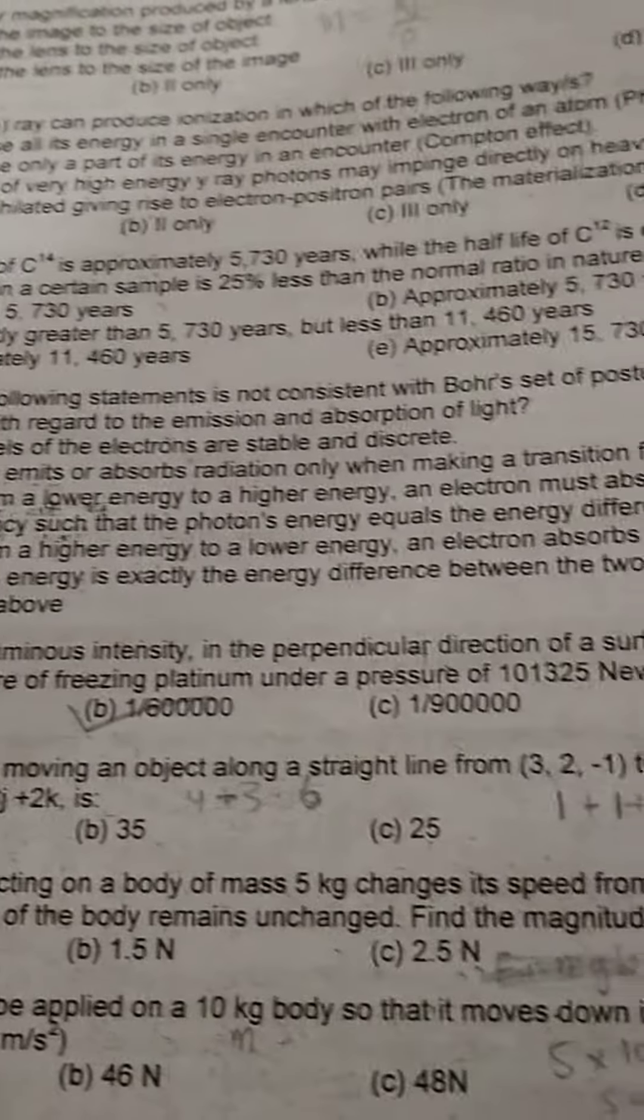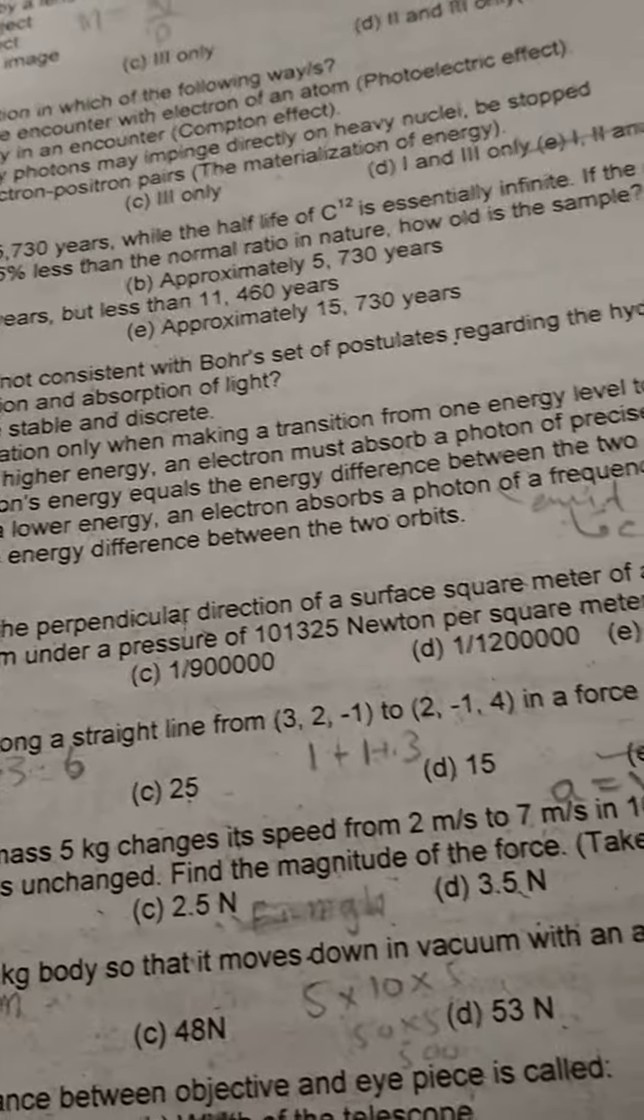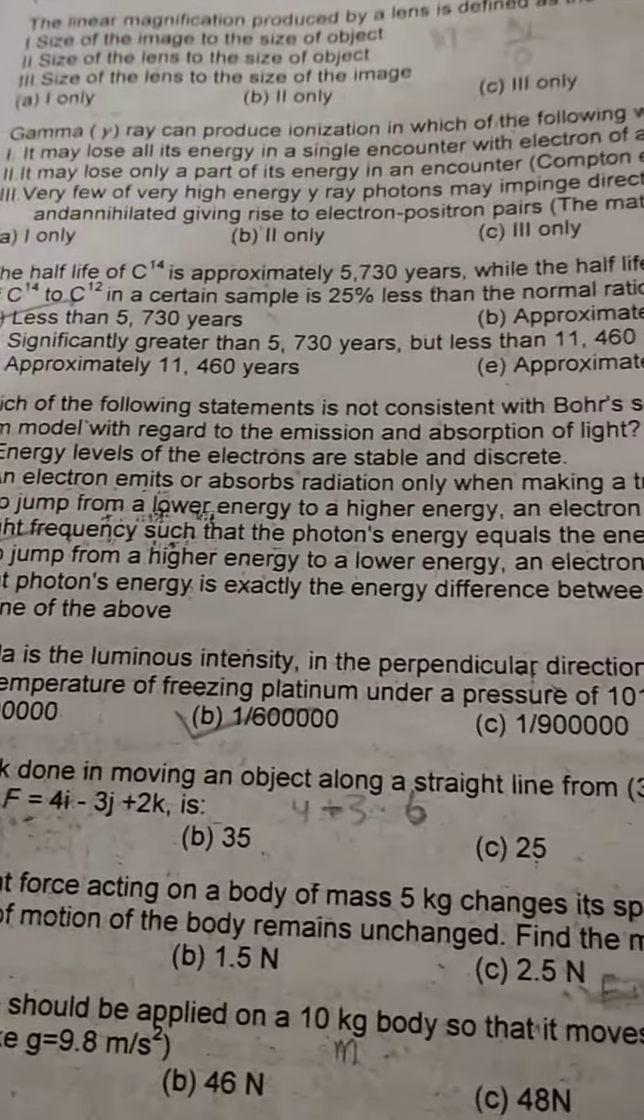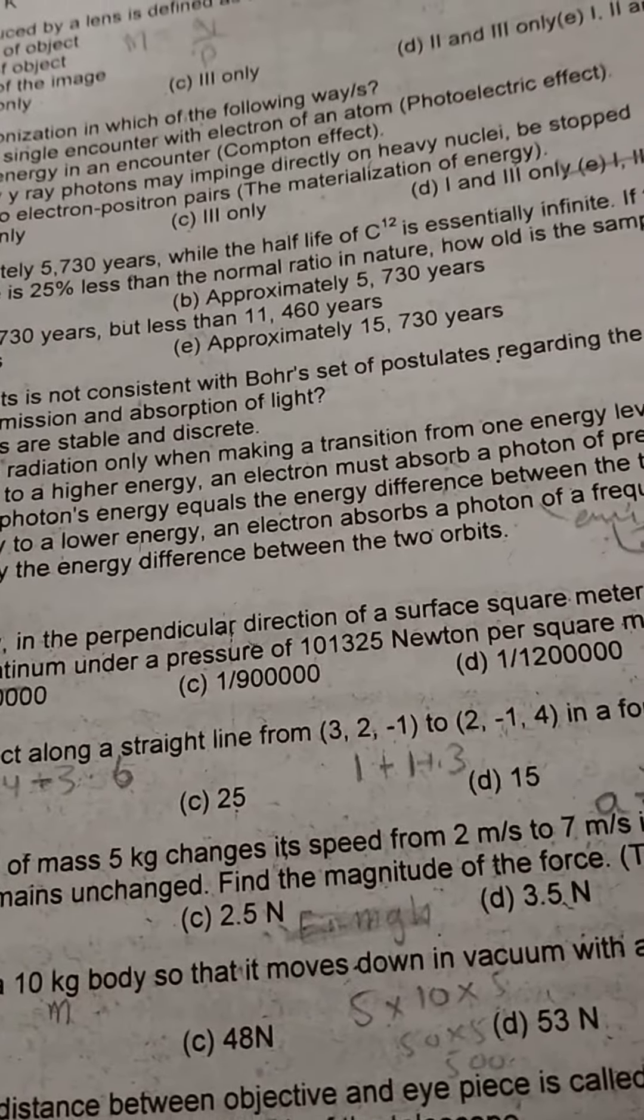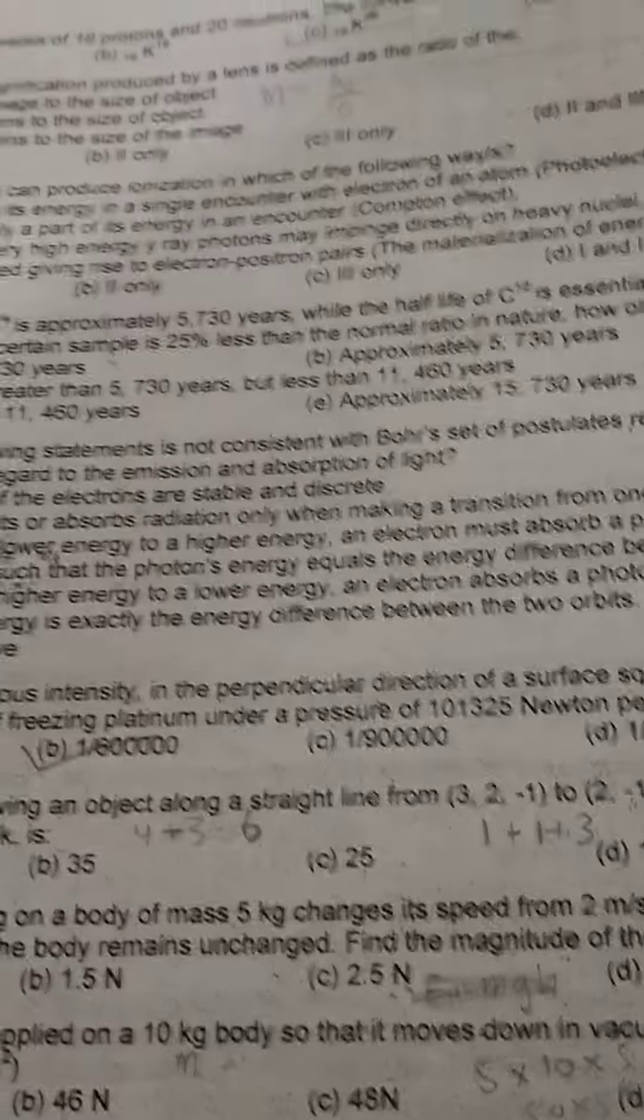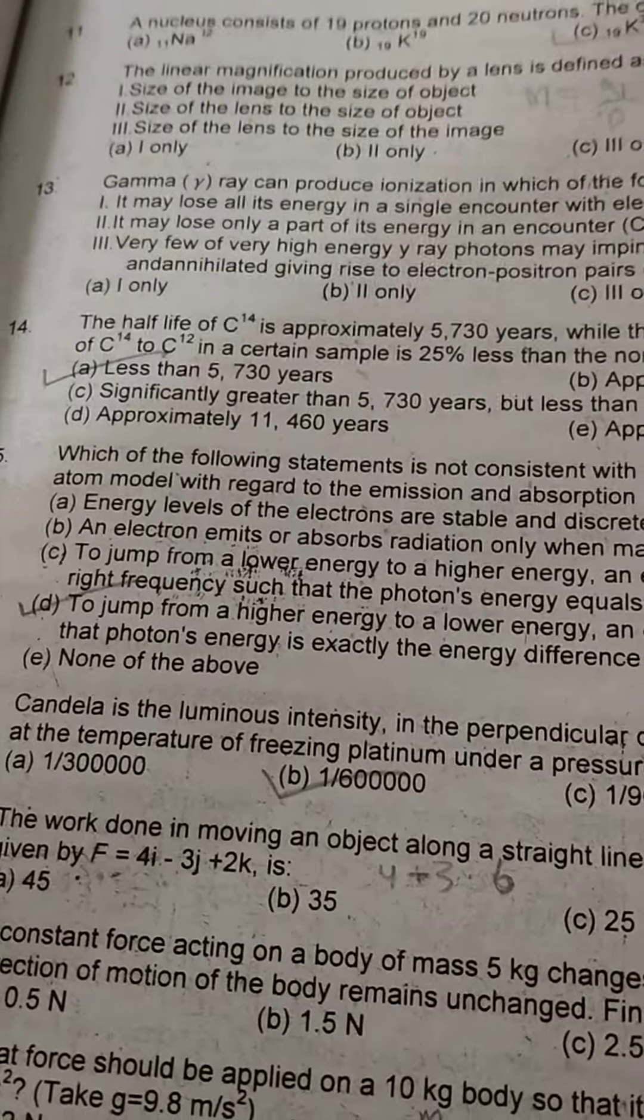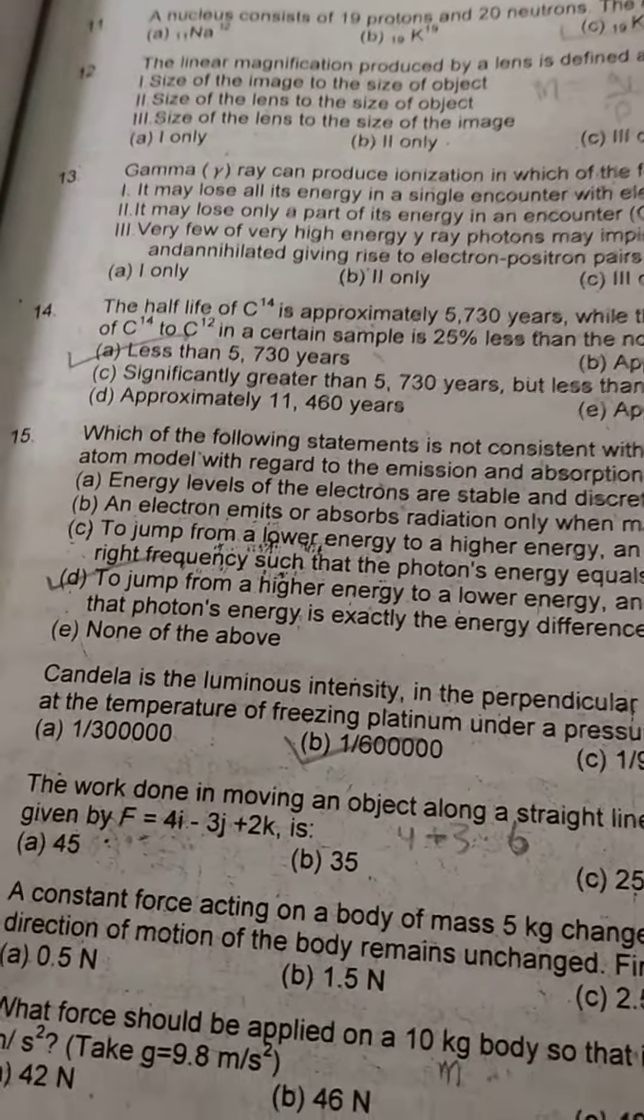To jump from higher energy to lower energy, an electron absorbs a photon of frequency such that photon energy is exactly the energy difference between the two orbits. Well, this statement D is incorrect. So the answer will be D.